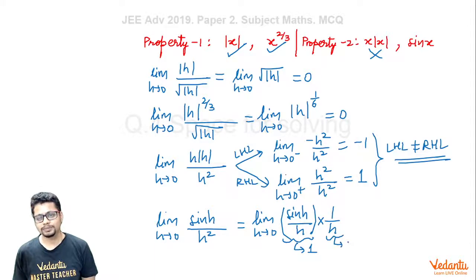But the 1/h term goes to infinity or minus infinity depending on whether we consider the right-hand or left-hand limit. So the overall limiting value does not exist. Therefore, sin x does not have Property 2.